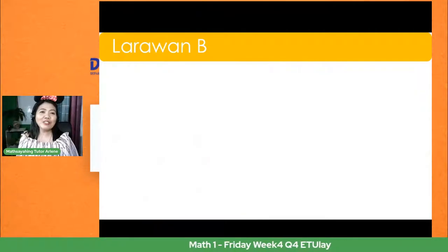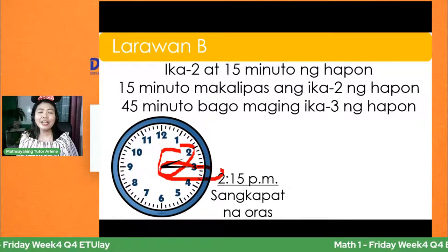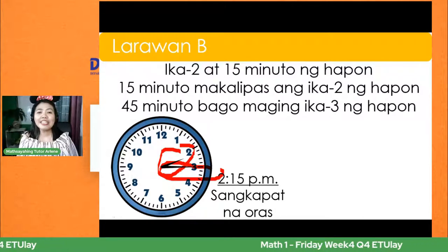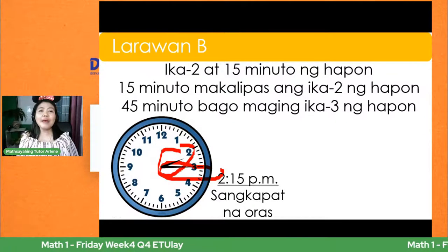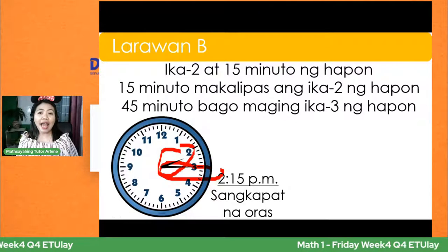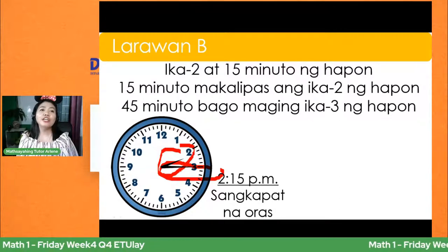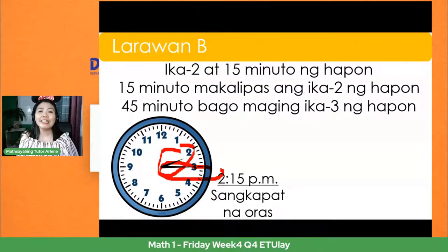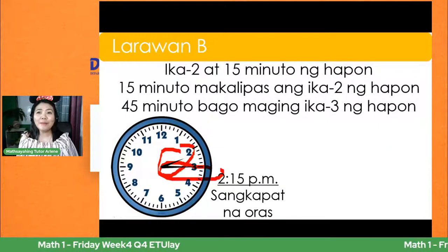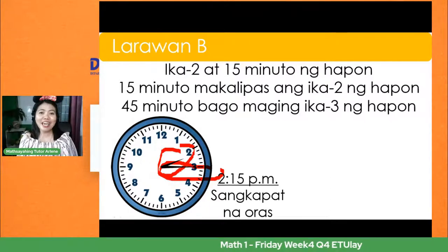Sa Tagalog, ganito ang wastong pagbasa. Kagaya nito, pag binasa natin ito, maikling kamay ay nasa 2 at ang mahabang kamay ay nasa 6, which is 30 minutes. Ang basa natin dyan ay 2:30. Kung ito ay sa Tagalog, ang sasabihin natin ay 'ikadalawa at 30 minuto ng umaga,' o kaya naman '30 minuto makalipas ang ikalawa ng umaga,' o '30 minuto bago maging ikatatlo ng umaga.' Mahaba, di ba, pag Tagalog? Kaya ang ginagamit na natin ay English — mas madali.